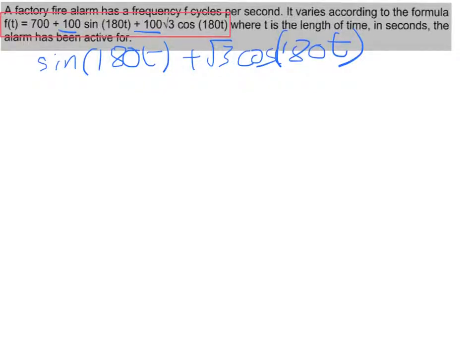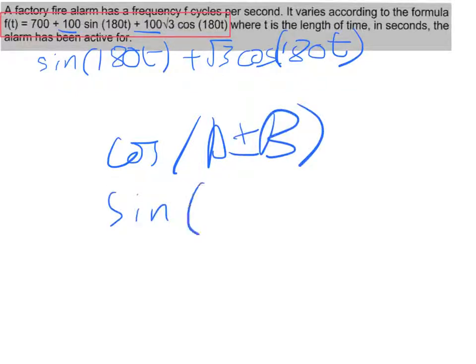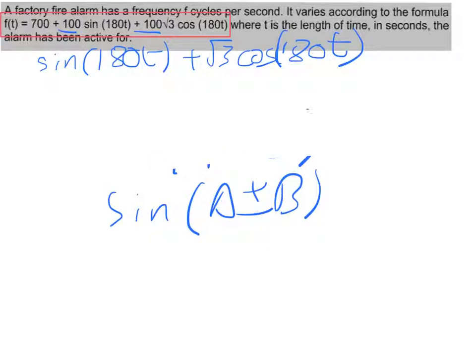To express this as a single trig function, I need to use one of the four identities. So I need to use either cos a plus or minus b, or I need to use sine a plus or minus b and the relevant expansions. What I'm going to use is sine a plus b, but of course any of the other four will work.